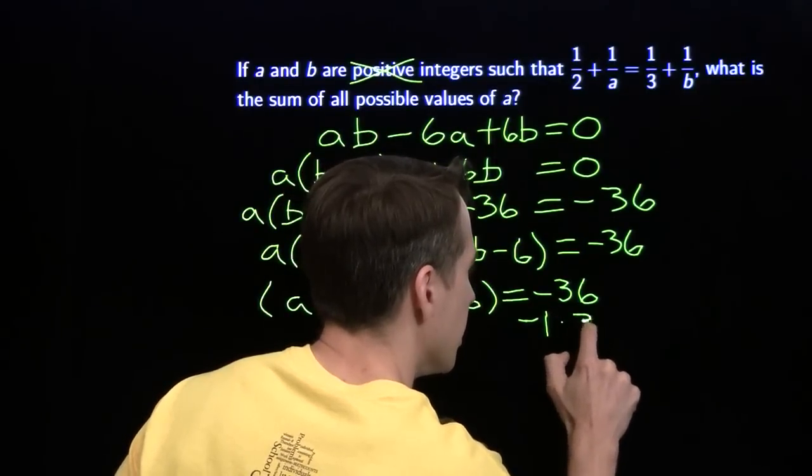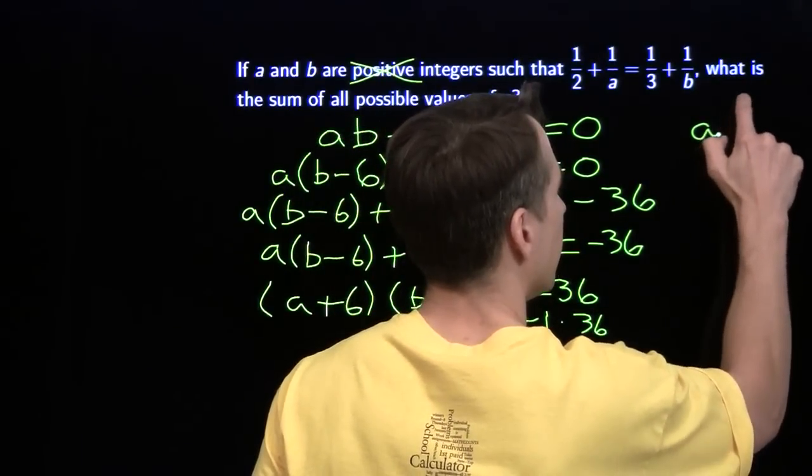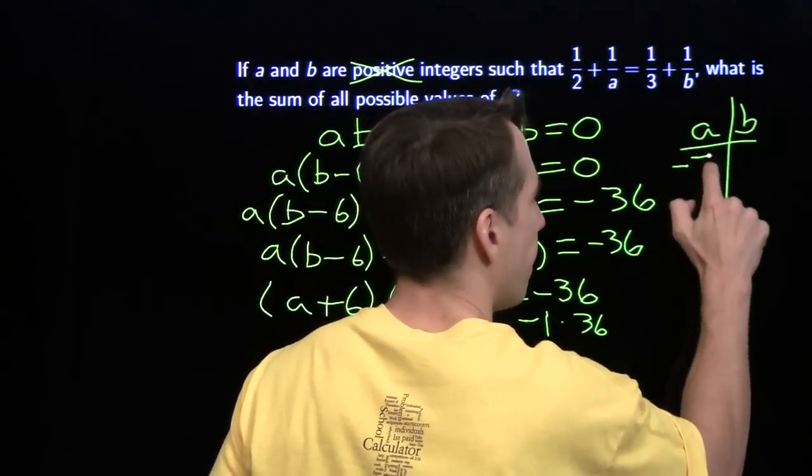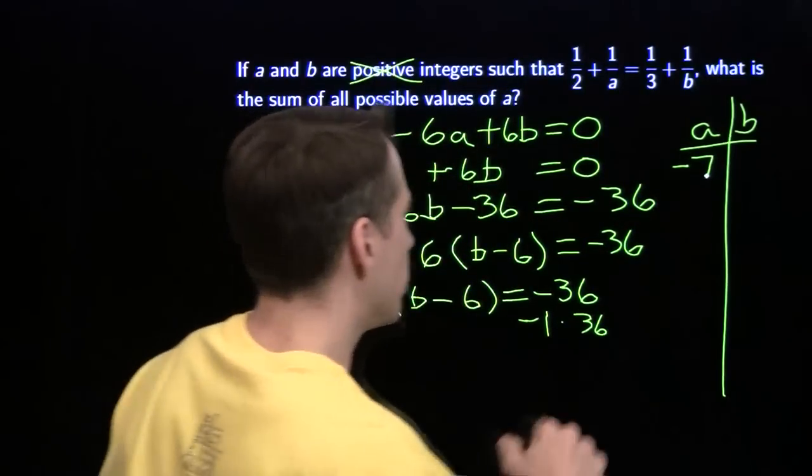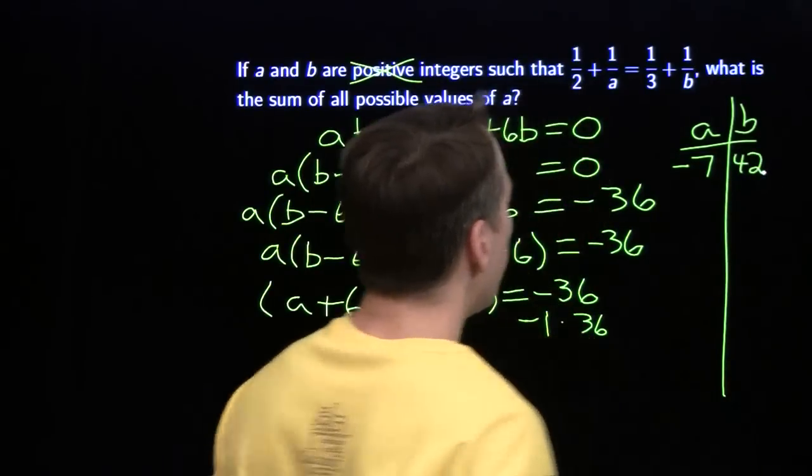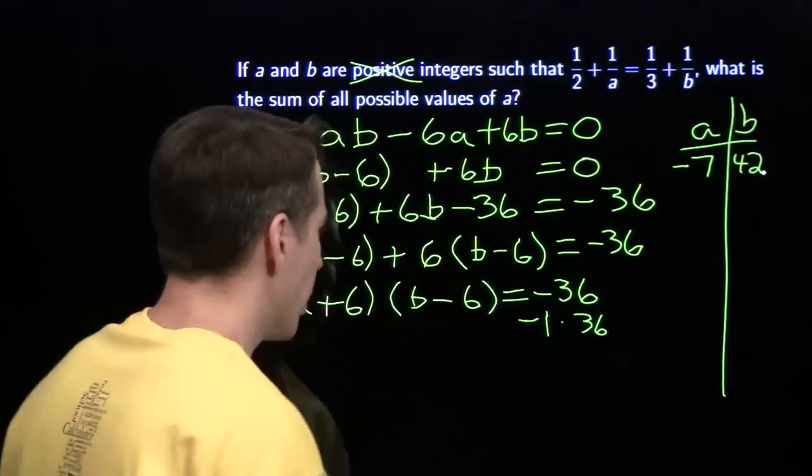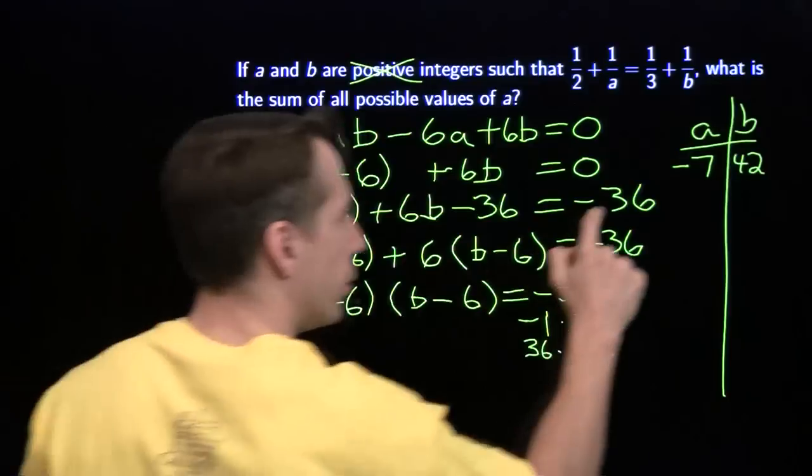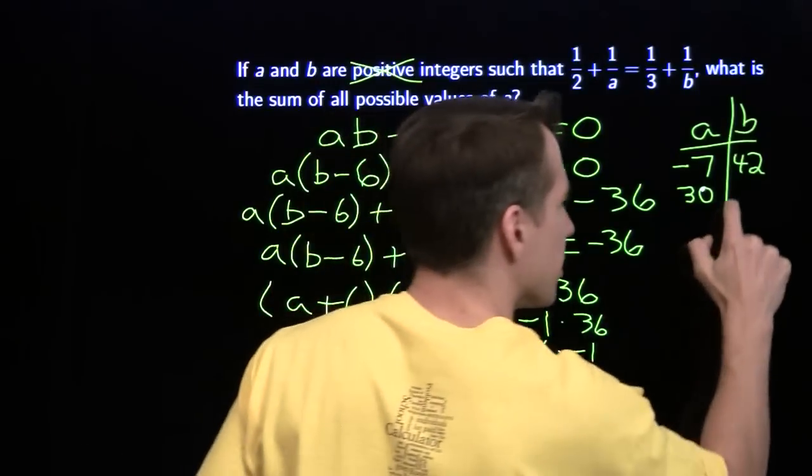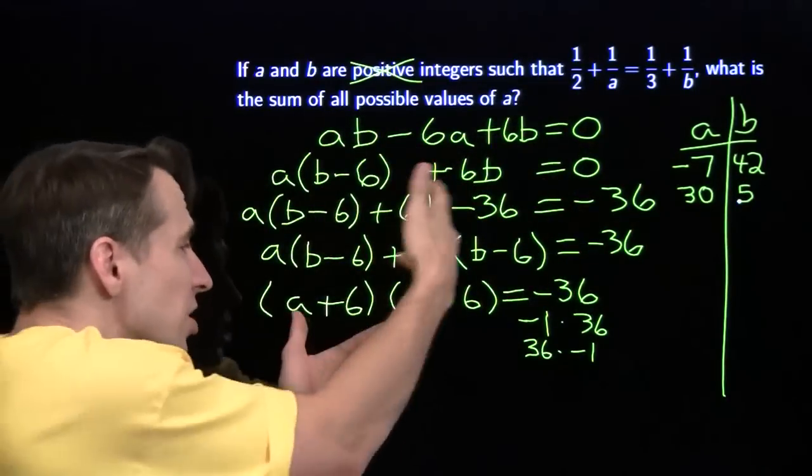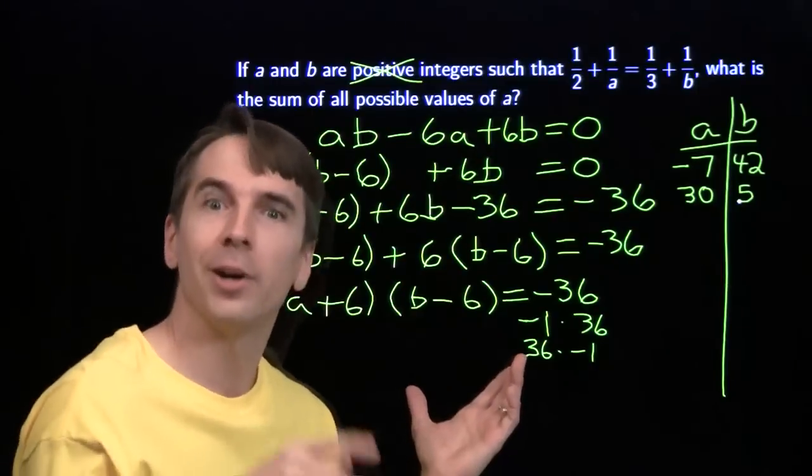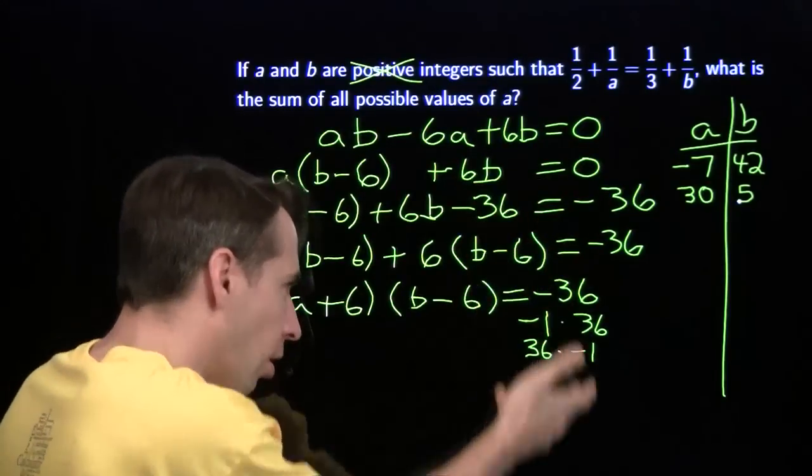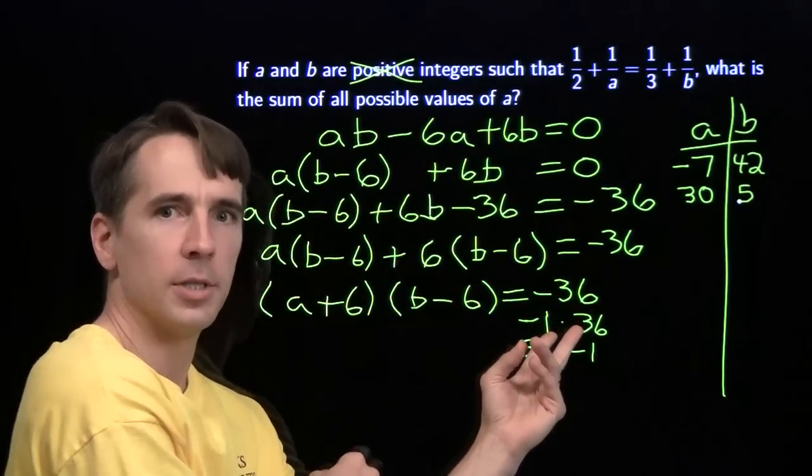For example, if we put negative 1 times 36, we put in negative 7 for a, and we get 36, we put in 42 for b. Give it a whirl. Stick in negative 7 and 42 up there. It works. We can also flip that around and call it 36 times negative 1. We get 30 for a, and 5 for b. That's one of the solutions we found from before. And we can just keep going, crank them all out. Now, there are a lot of them, so I'm going to let you do that one at home. But we can see now, factored expression equal to an integer. We just use all the possible factorizations of the integer to crank out all of our solutions.